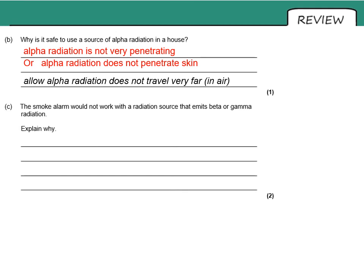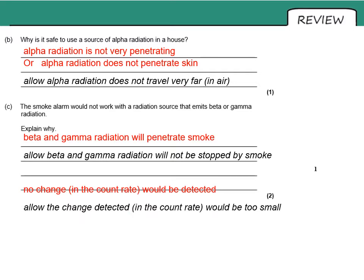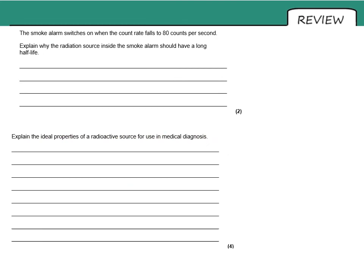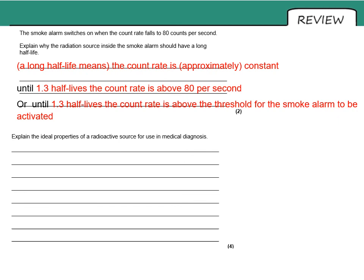The smoke alarm will not work with beta or gamma because those types will penetrate the smoke — there will be no change in count rate or current. The radiation source in a smoke alarm should have a long half-life because that gives an approximately constant count rate. Looking at the graph, as long as activity is above 80 counts per second the alarm won't be falsely activated, and the radiation level drops to that threshold at about 1.3 half-lives.